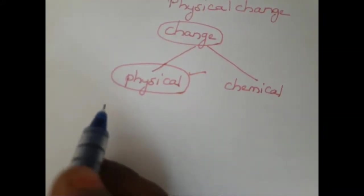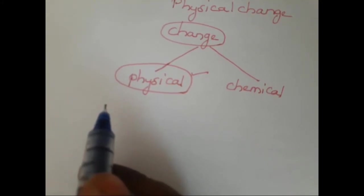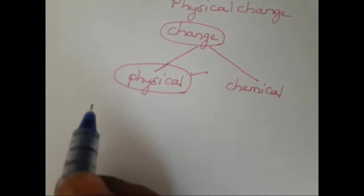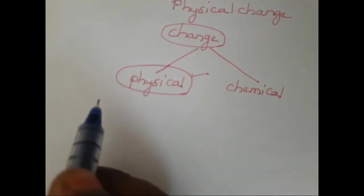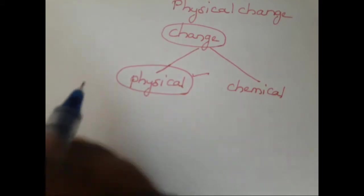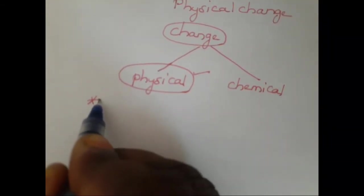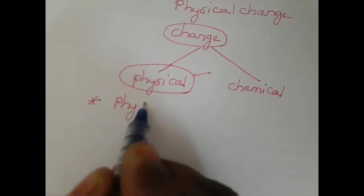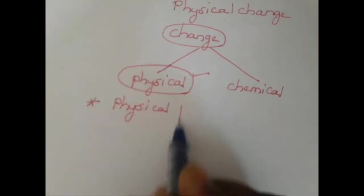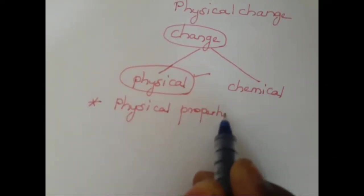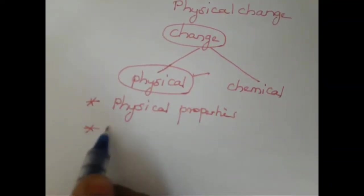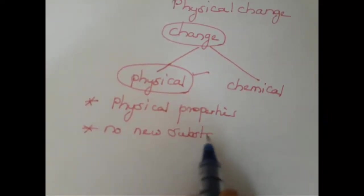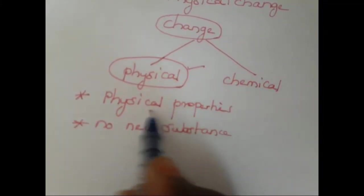Now let me give the definition for physical change. A change in which only the physical properties of a substance change and no new substance is formed is called a physical change. Only the physical properties will undergo a change, and no new substance is formed — such a change is called a physical change.